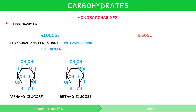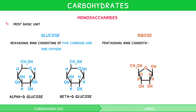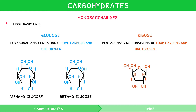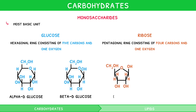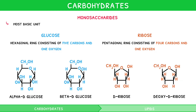Ribose is a pentagonal ring consisting of four carbons and one oxygen at the top. Like glucose, there is a CH2OH group on the upper left carbon. Ribose also comes in two forms, D-ribose and deoxy-D ribose. The difference is that in deoxy-D ribose, the bottom right hydroxyl loses its oxygen to become a hydrogen.